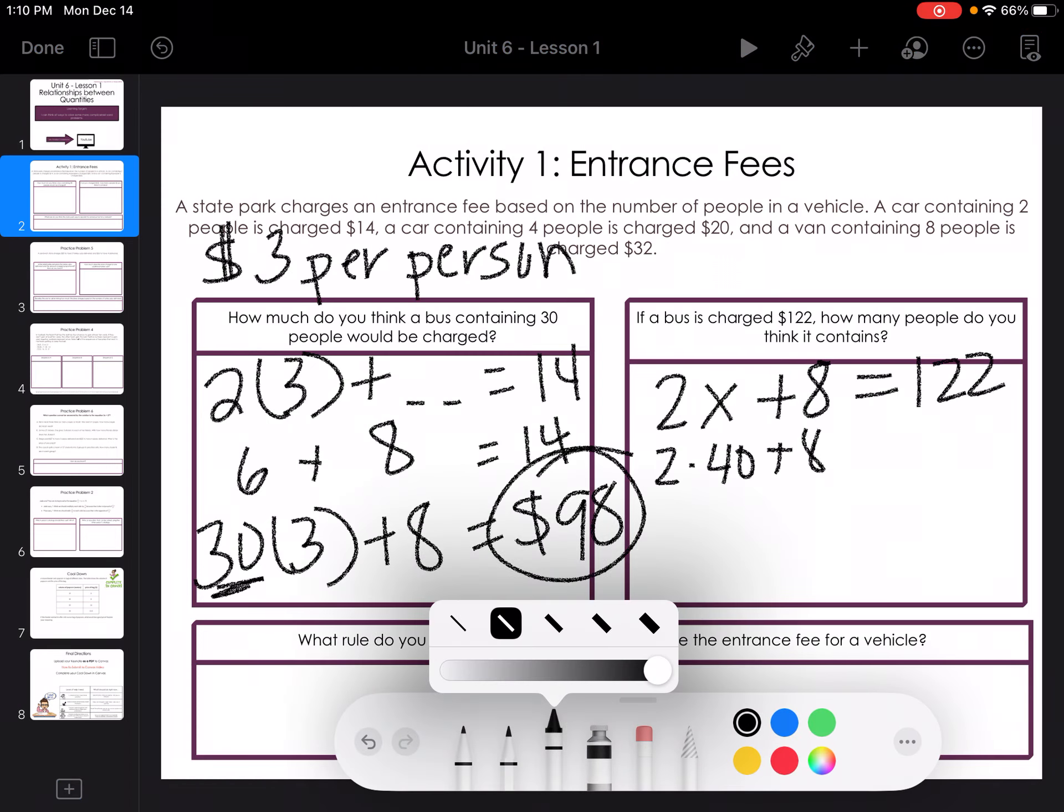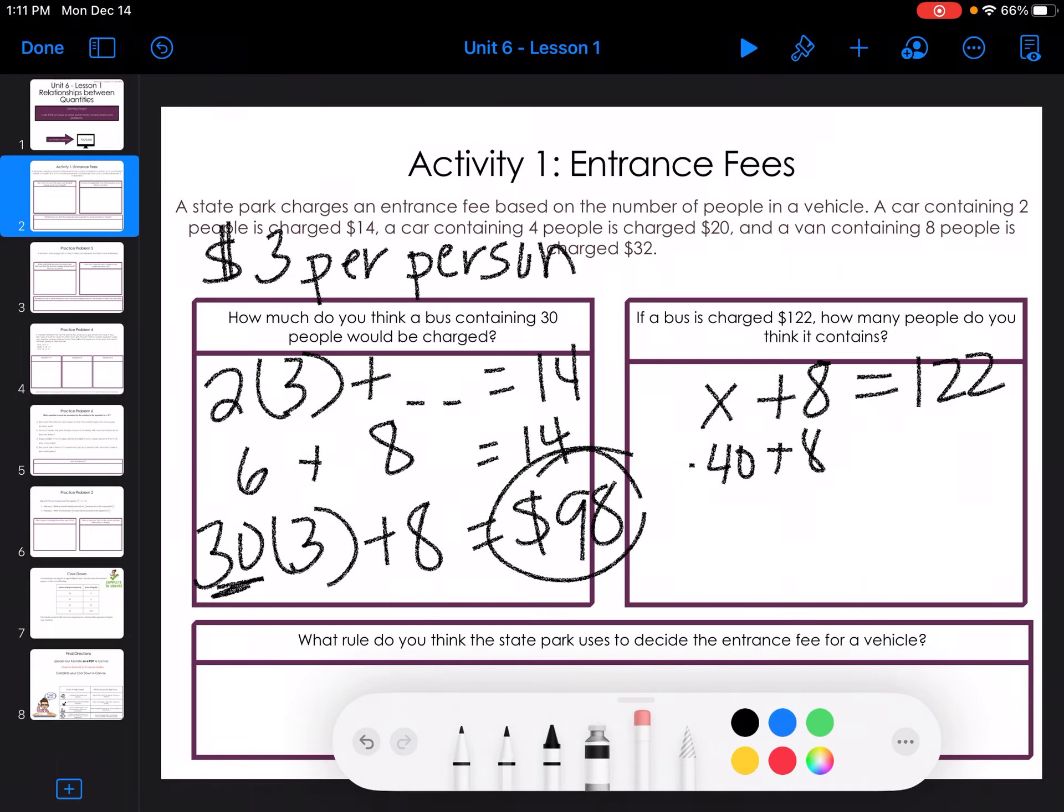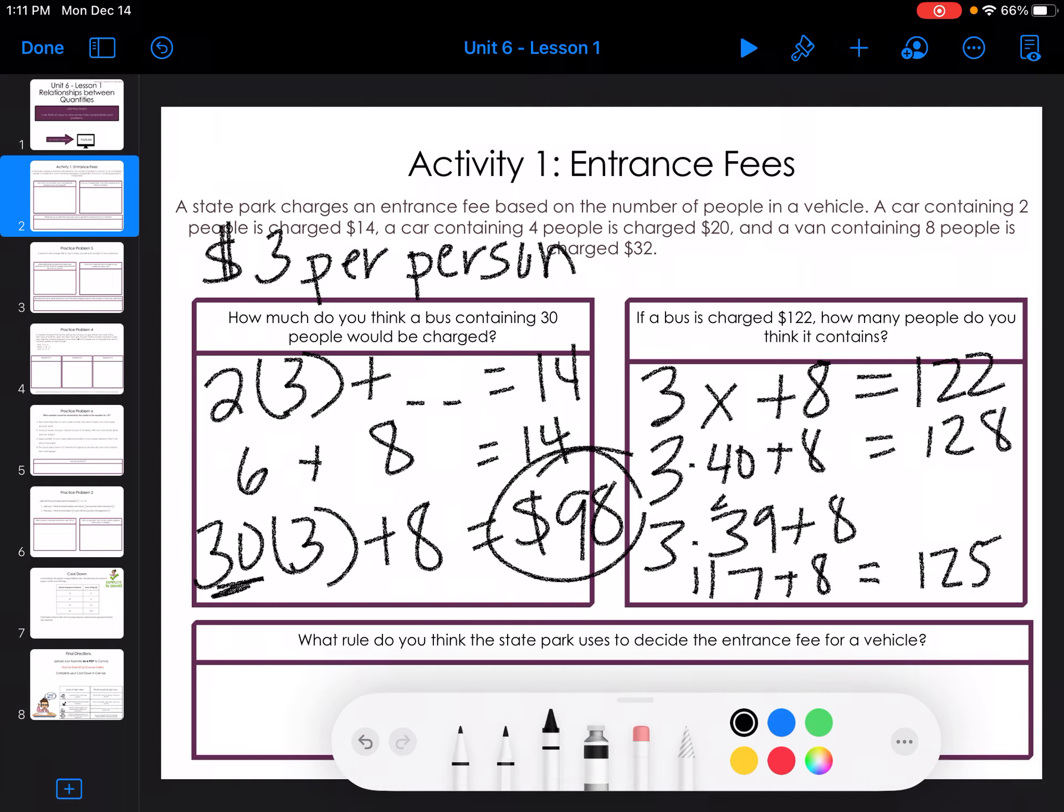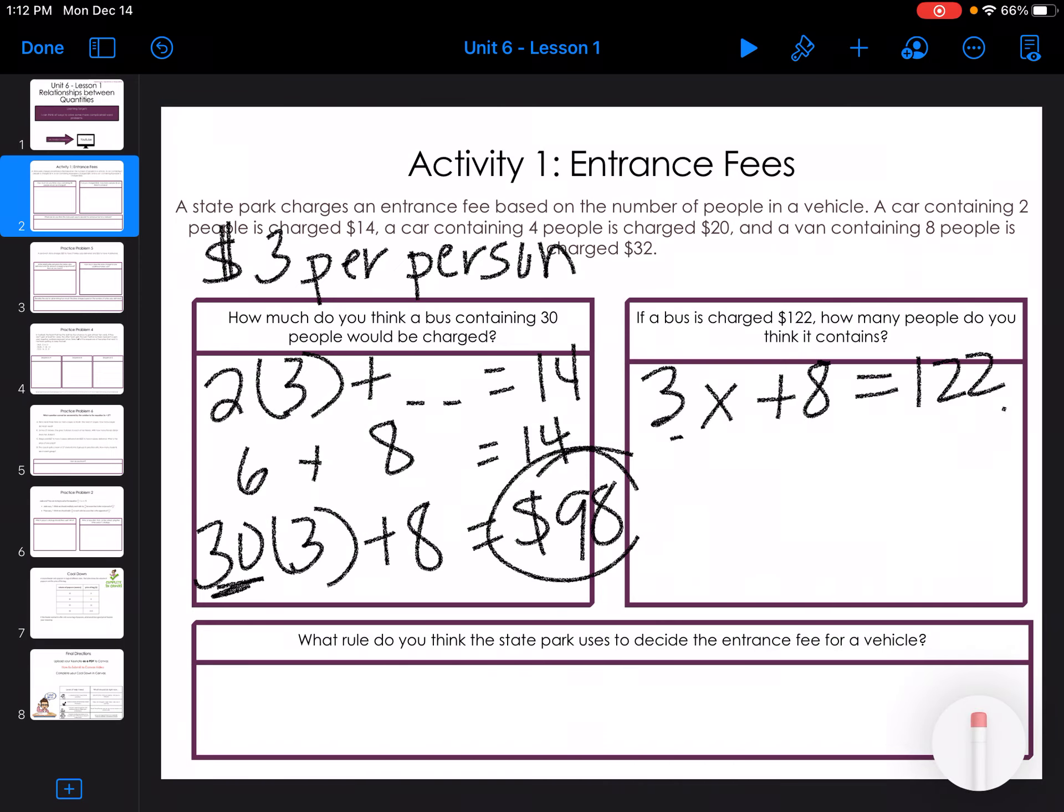Or not two, it would be three. So three times 40 would be 120 plus eight would be 128. So it's got to be less than 40. So I'm going to guess 39. Three times 39 is 117 plus eight, which is about $125. So that's too big. So it's got to be 38 people.